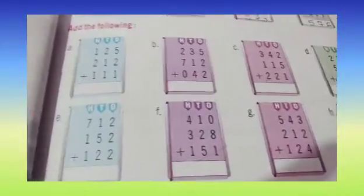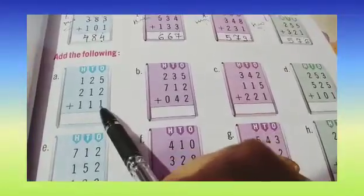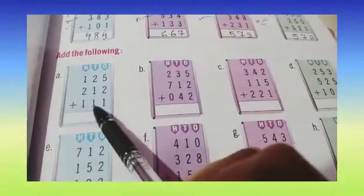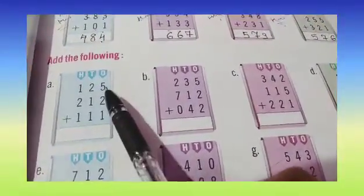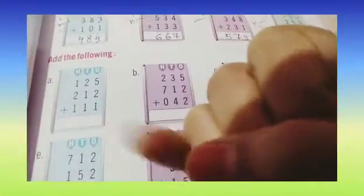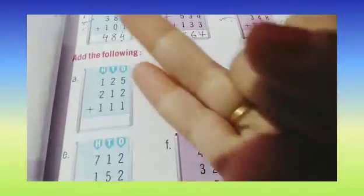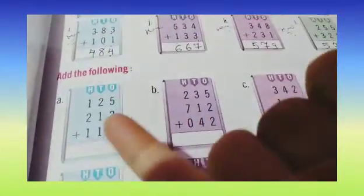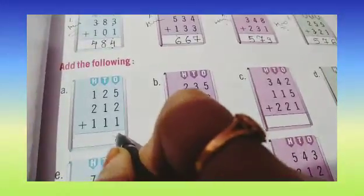Let's do. So children, part A is there: 5 plus 2 plus 1, 2 plus 1 plus 1, 1 plus 2 plus 1. First we are adding from the right hand side: 5 plus 2. Start counting from 5 — 6 and 7. So 5 plus 2 is 7. And 7 plus 1 is 8. So we are writing 8 here.